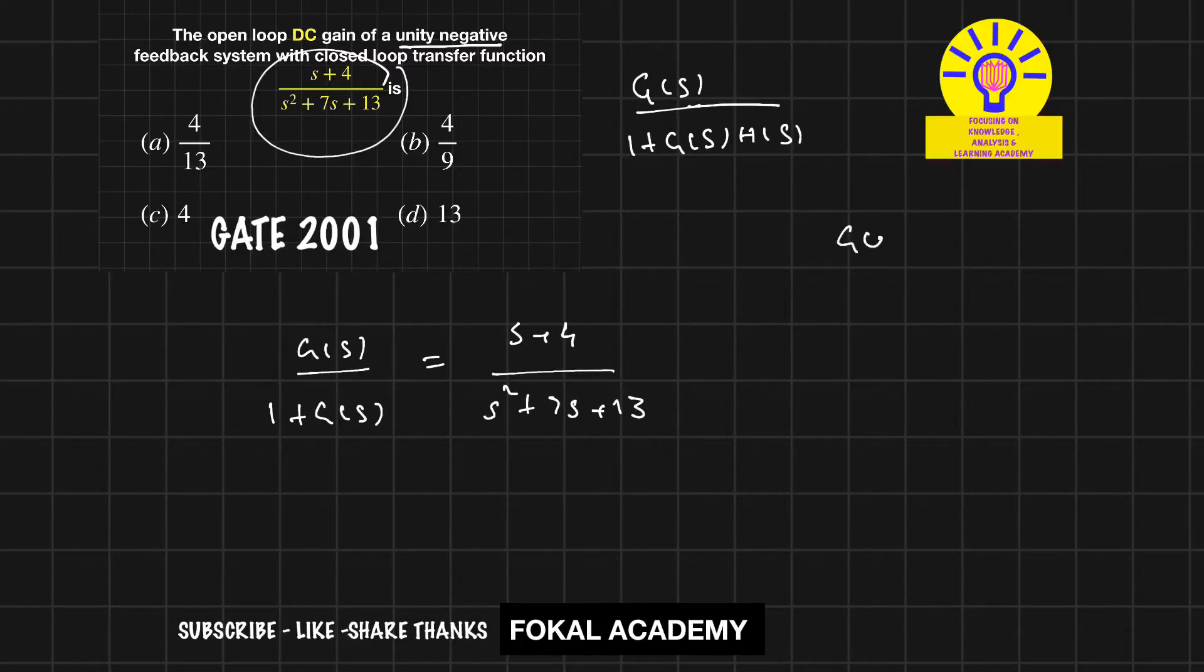That is G(s). Now inverse here means I am going to change the numerator and denominator. That is 1 plus G(s) divided by G(s).